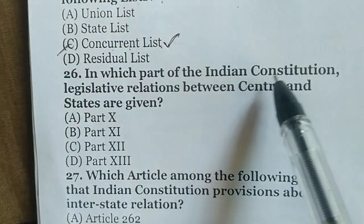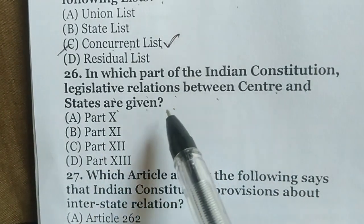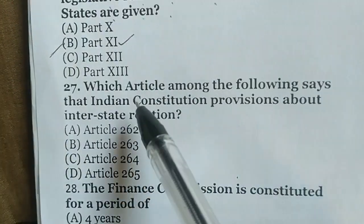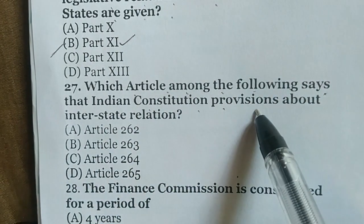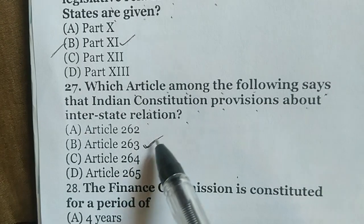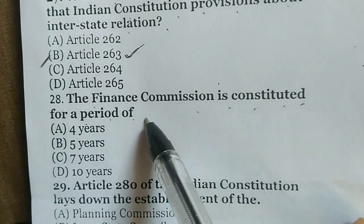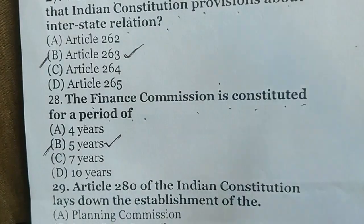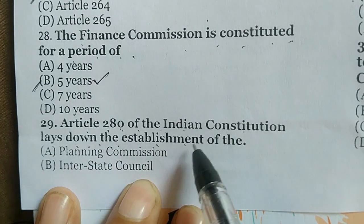In which part of the Indian Constitution are legislative relations between the Centre and states given? The correct answer is Part 11 — option B. Which article deals with interstate relations? The correct answer is Article 263 — option B. The Finance Commission is constituted for a period of — the correct answer is five years — option B. Article 280 of the Indian Constitution lays down the establishment of the Finance Commission.